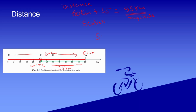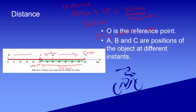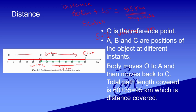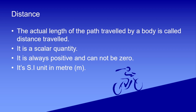The SI unit of distance is meter, denoted by small 'm'. So to summarize: Distance is the actual length of the path traveled by a body. It is a scalar quantity — direction is not needed. Distance will always be positive or zero; it cannot be negative.